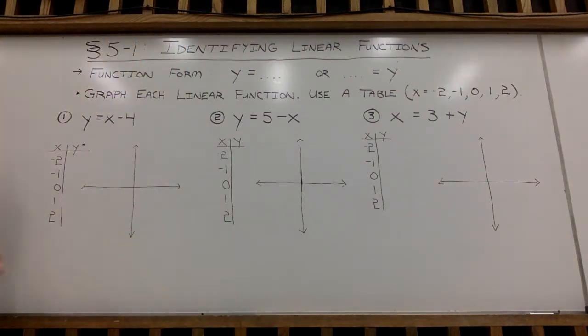So as we look at our first example here, we have this equation here, y equals x minus 4 in function form, since y is by itself. So what I'm going to do is plug in negative 2, negative 1, 0, 1, and 2 in for x, and then figure out what the y value would be. So if I put in negative 2 for x, negative 2 minus 4 is negative 6. Negative 1 minus 4, negative 5. 0 minus 4, negative 4. 1 minus 4, negative 3. 2 minus 4, negative 2.